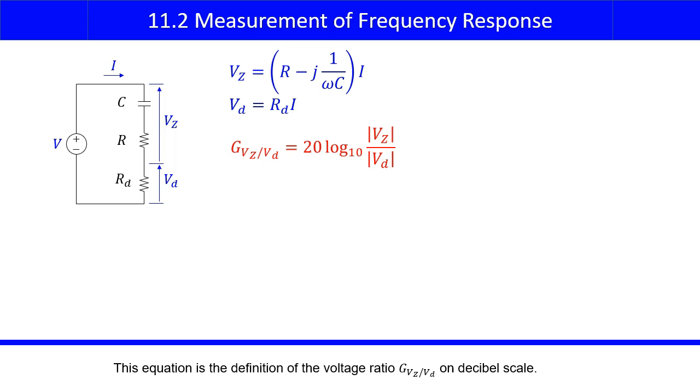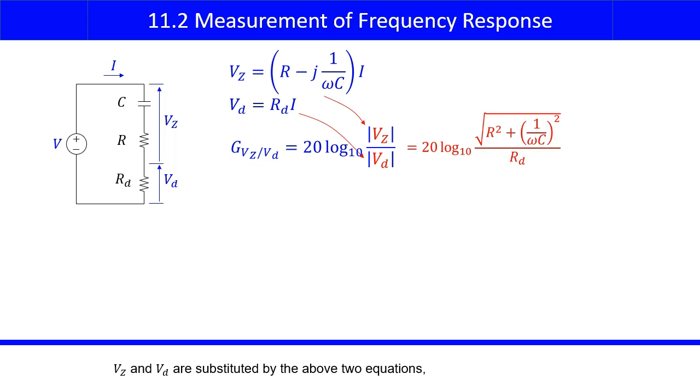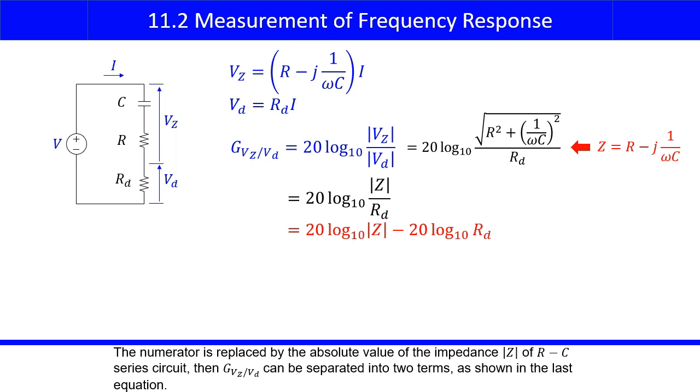This equation is the definition of the voltage ratio GVZ over VD on decibel scale. VZ and VD are substituted by the above two equations. The numerator is replaced by the absolute value of the impedance Z of RC series circuit, then GVZ over VD can be separated into two terms, as shown in the last equation.